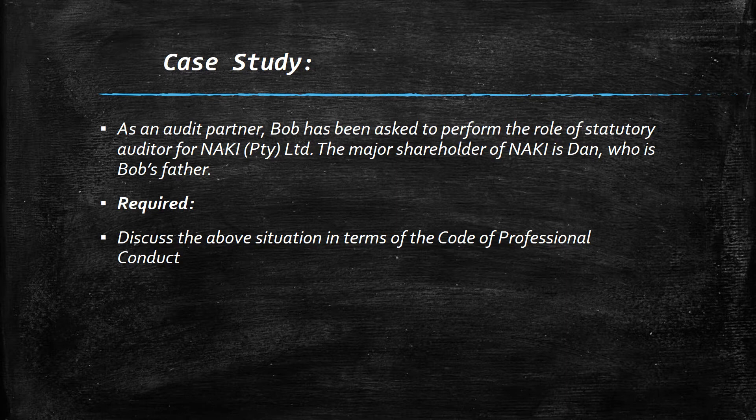In this video I'm going to be showing you how to approach audit questions — the do's and don'ts and the common mistakes that you should avoid. As an audit partner, Bob has been asked to perform the role of statutory auditor for Nike Pty Ltd. The majority shareholder of Nike is Dan, who is Bob's father. The requirement is to discuss the above situation in terms of the Code of Professional Conduct. The first thing we should look at is what the question requires us to do: we are supposed to look at the code of professional conduct of an auditor.